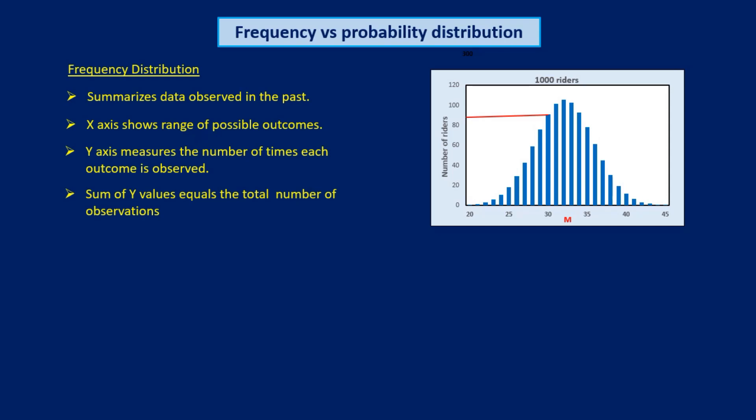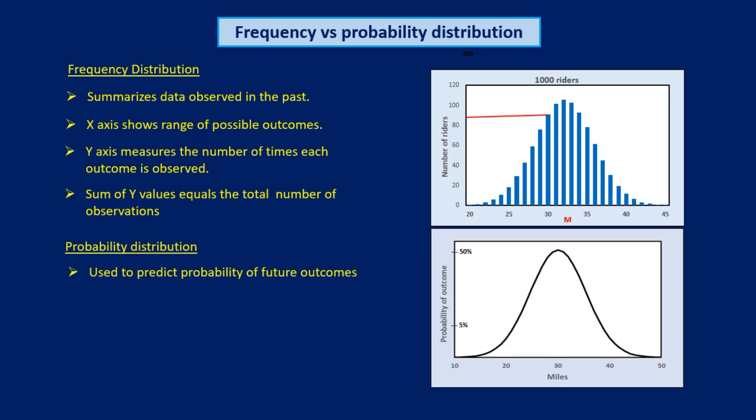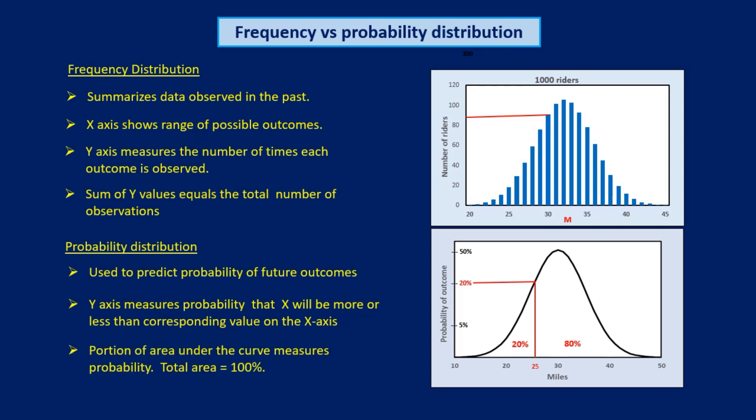A probability distribution, by contrast, is commonly used to predict future outcomes. In a probability distribution, the y-axis measures the probability that a particular value of the variable will be observed in the future. For example, this distribution tells us that there is a 20% chance that a rider will ride less than 25 miles next summer and an 80% chance that she will ride more than 25 miles. The portion of the area under the curve measures the probability of an outcome, and the total area under the curve equals 100%, which is the probability of all outcomes.